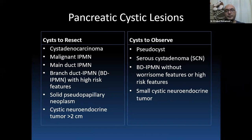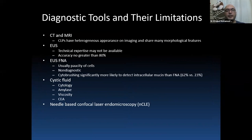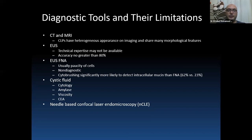The diagnostic tools and their limitations in pancreatic cystic diagnosis include CT and MRI, both in pancreatic protocol, which have sensitivity to detect cystic lesions. The key importance of MRI/MRCP is to show the connection to the pancreatic duct, especially in IPMN and side branch IPMN. EOS requires technical expertise not available in every center, and accuracy is no greater than 80%. EOS FNA shows benefit especially with positive cytology.